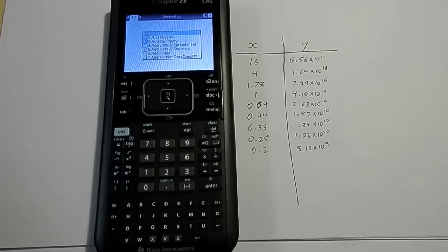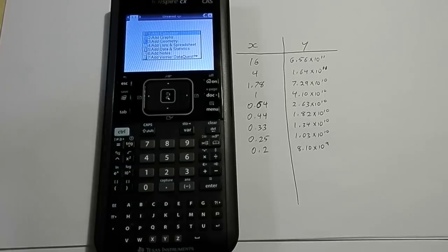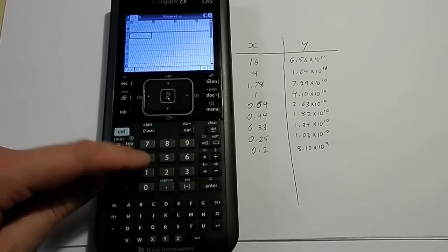And the way that we want to go with this is to choose to add a list and spreadsheet, because we want to set up a spreadsheet of these values. So, I'm going to choose the fourth option.